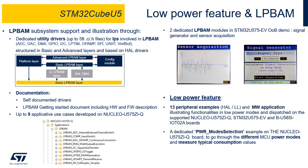The STM32Cube U5 series features the low-power background autonomous mode subsystem, which allows peripherals to be functional and autonomous regardless of the power modes and without any software running. It can chain diverse operations through DMA-linked list transfers. The LP-BAM utility is a set of modular drivers located in the utilities folder of the STM32Cube U5 firmware package.